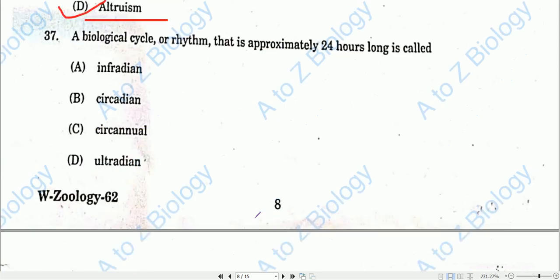Question number thirty-seven: A biological cycle or rhythm that is approximately 24 hours long is called a circadian rhythm. Option B will be the correct one.